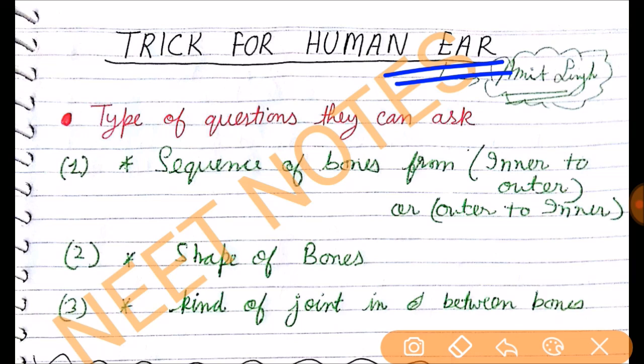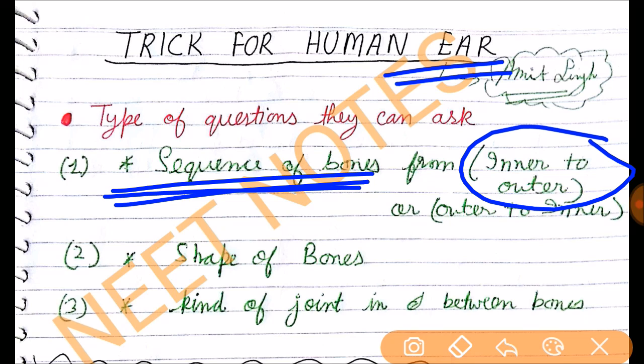First of all we'll see what type of questions they can ask in exam. So first type of question that they can ask is sequence of bones from inner to outer. Basically there are three main important bones in human ear, so they can ask sequence of those three bones.